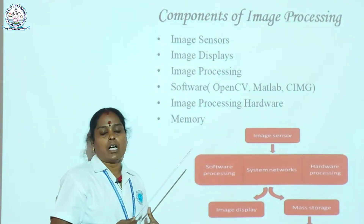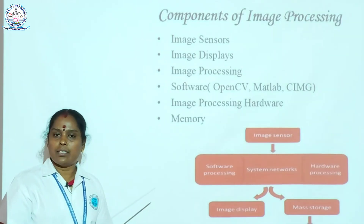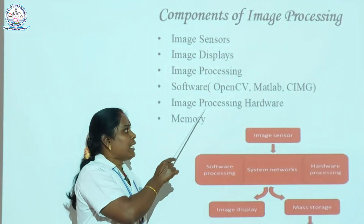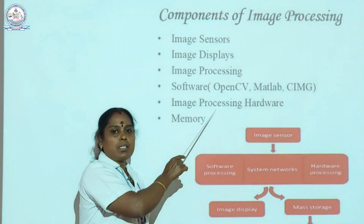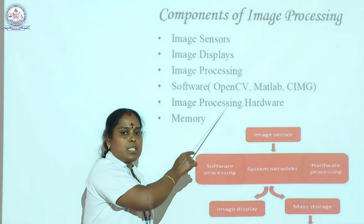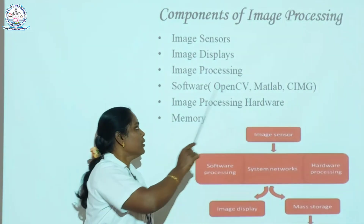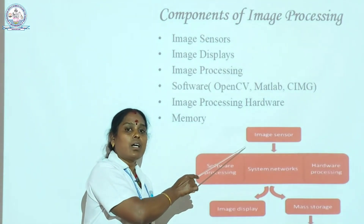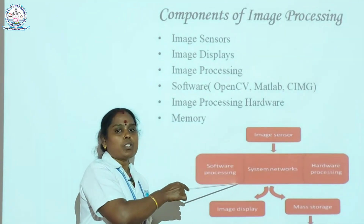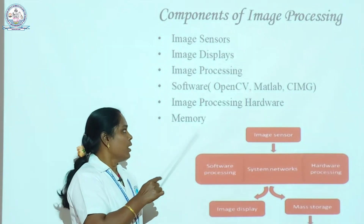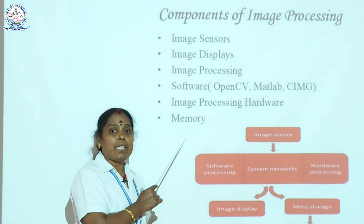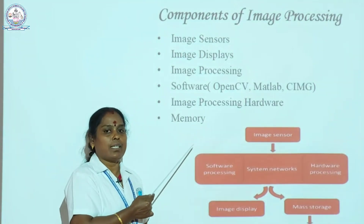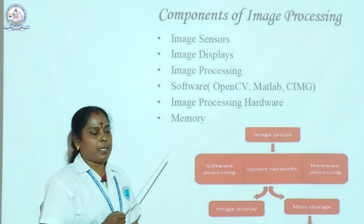Third is image processing hardware components — what hardware is needed for image processing. Fourth is software components. Three softwares are commonly used: OpenCV, MATLAB, and SimC. The hardware components are used in the processing method. Last is memory speed — what amount of memory speed is needed to process images.